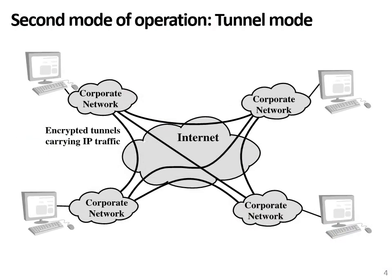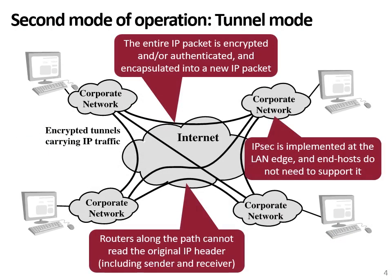The second mode of operation is tunnel mode. In this mode, the entire IP packet is encrypted and/or authenticated, including the header. It is then encapsulated into a new IP packet. IPsec in this case is implemented at the edges of the local network — for example, at the edge between a corporate network and the public internet. This also means that the end hosts do not need to support IPsec. Also, the routers along the path cannot read the original IP header, so they don't know who is the original sender and receiver. They only know the corporate network from which the packet originates or to which it is destined.